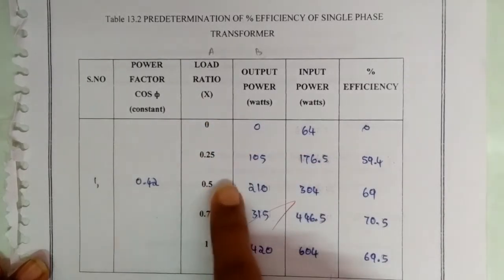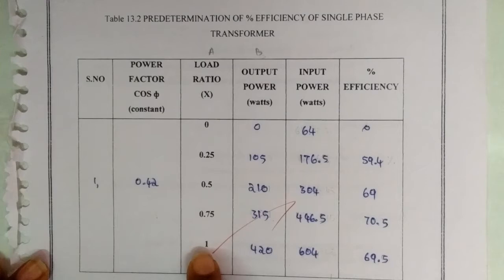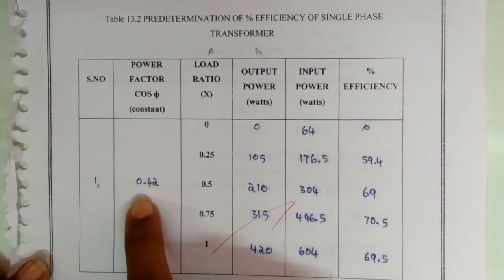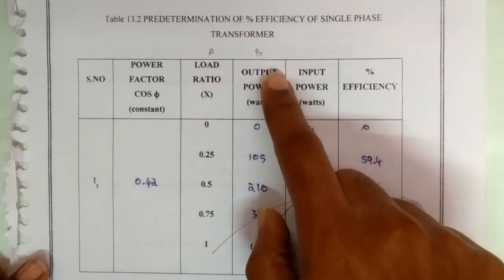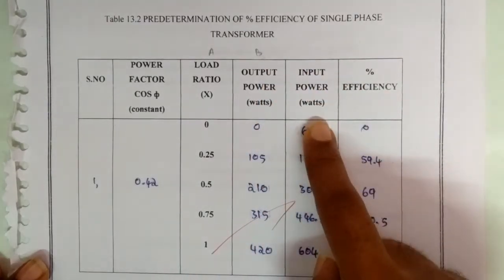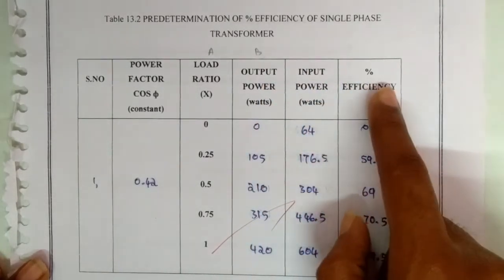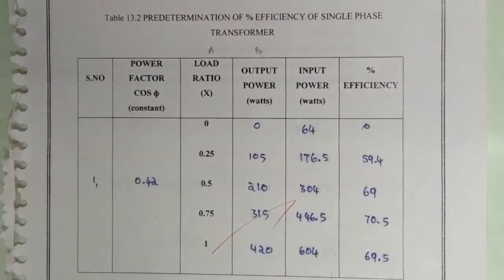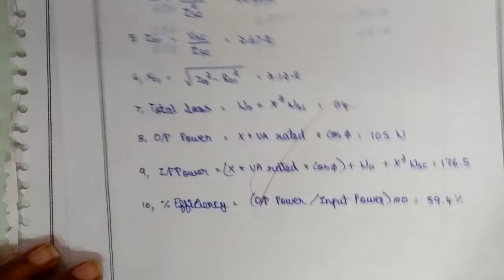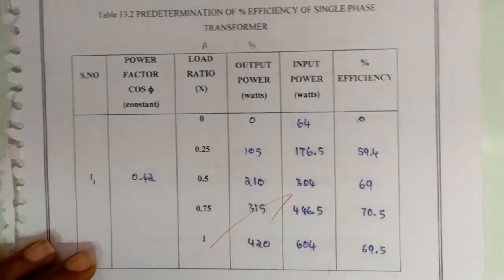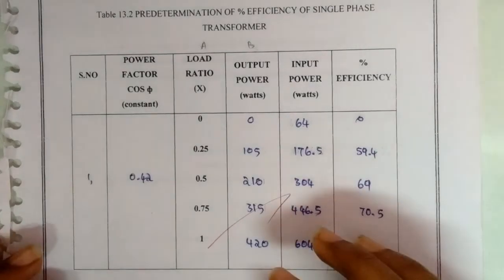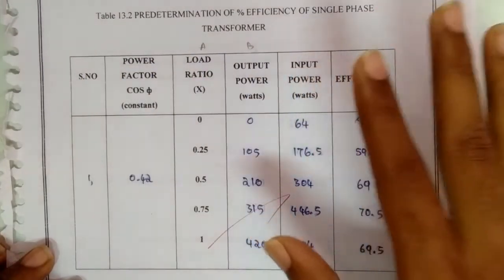With this load ratio for the corresponding power factor cos φ₀, we will get output power, input power, and finally efficiency by using the formula output power by input power. I have given the formula here and I have given the document link in the description. With this, this tableau column will be over.